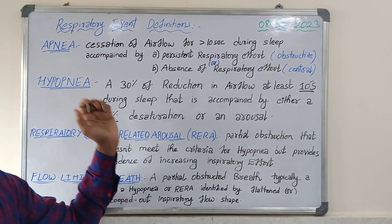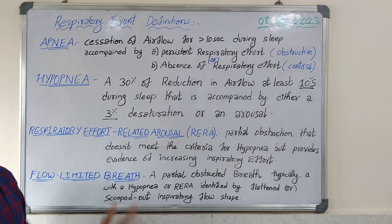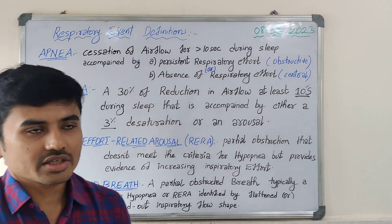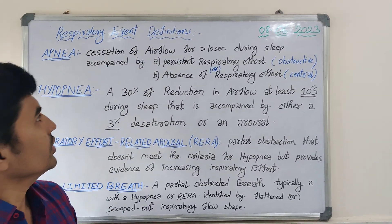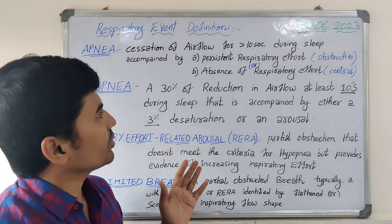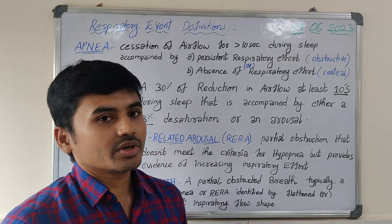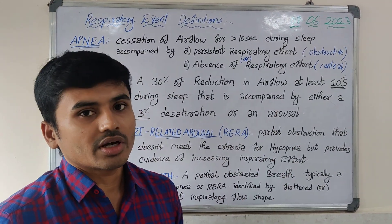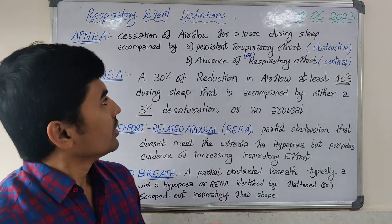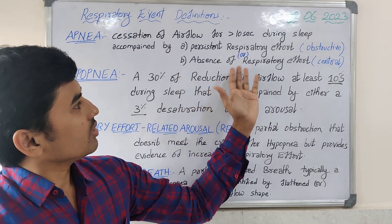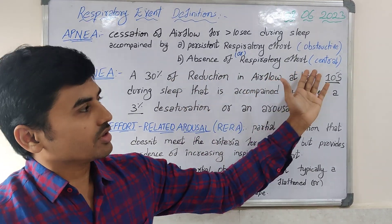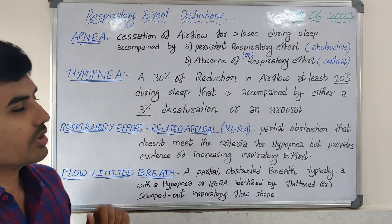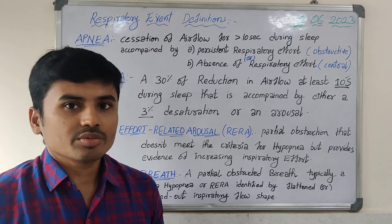The definition of apnea is cessation of airflow for more than 10 seconds during sleep, accompanied by persistent respiratory effort — that is obstructive apnea — or absence of respiratory effort — that is central apnea. Now let's see what hypopnea is.